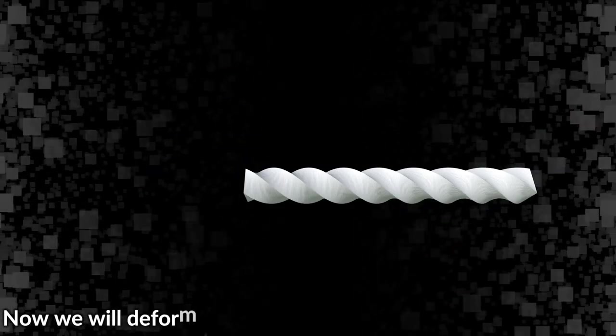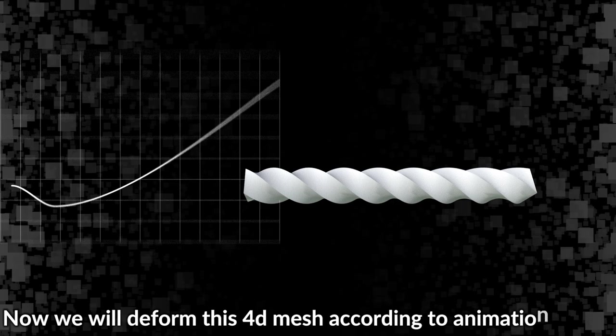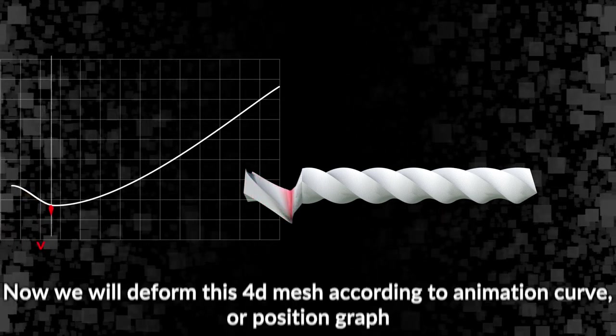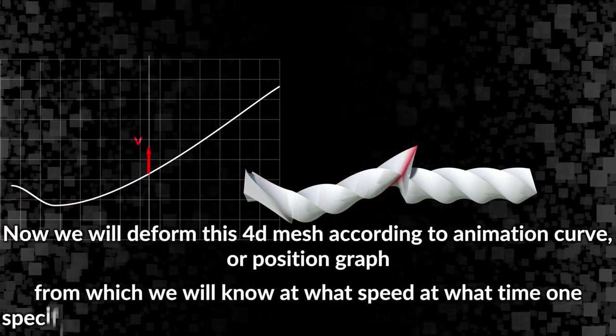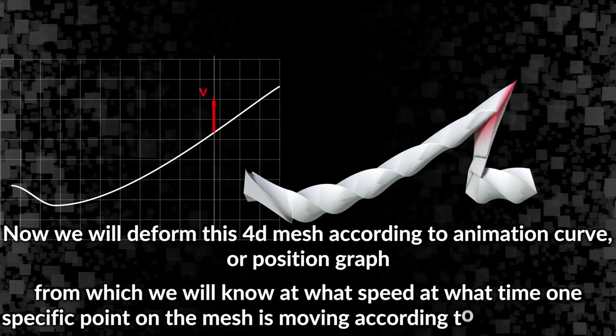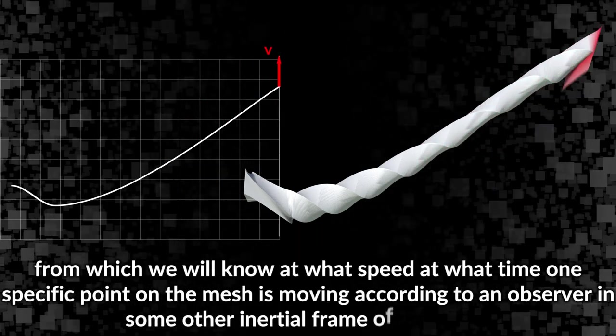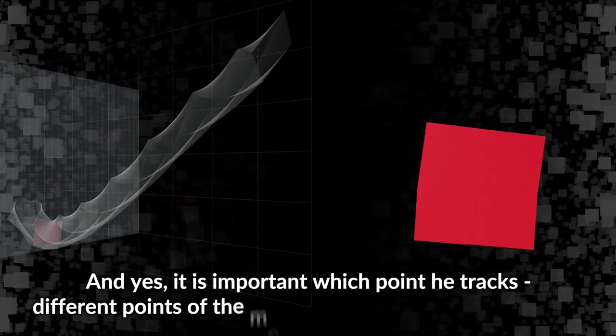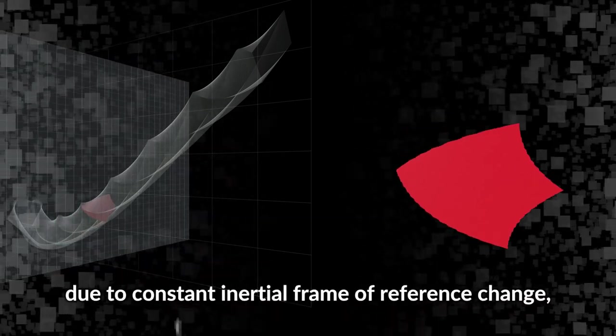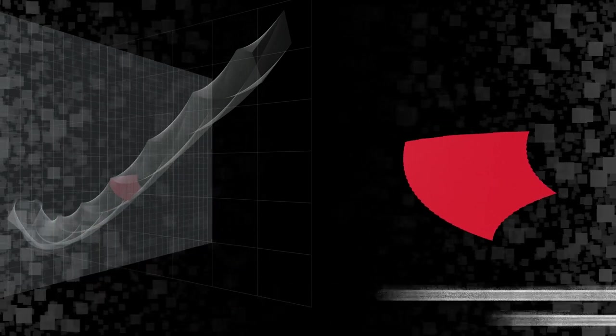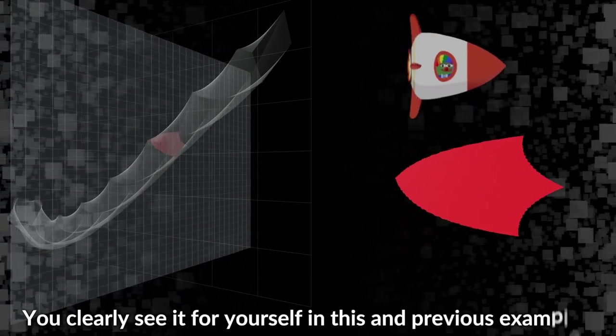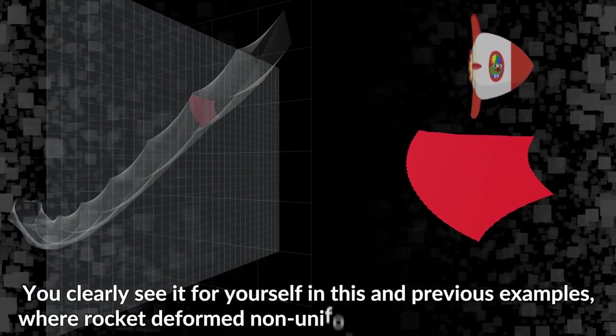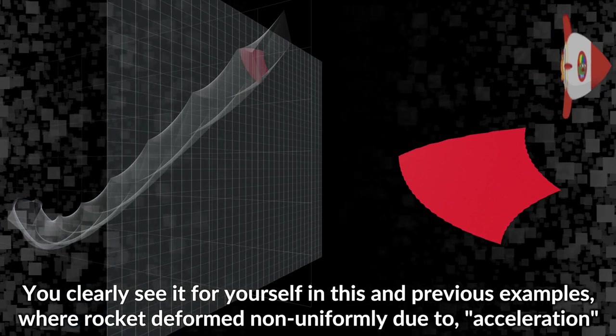Now we will deform this 4D mesh according to an animation curve or position graph, from which we will know at what speed at what time one specific point on the mesh is moving according to an observer in some other inertial frame of reference. And yes, it is important which point he tracks - different points of the mesh will move at different speeds due to constant inertial frame of reference change that represents acceleration. You clearly see it for yourself in this and previous examples where rocket deform non-uniformly due to acceleration, though special relativity does not directly define the speed of light in vacuum as the global speed limit of the universe.